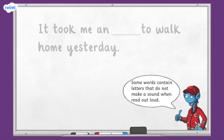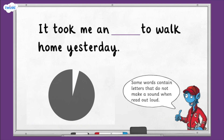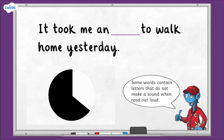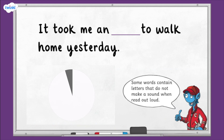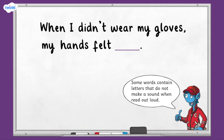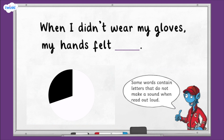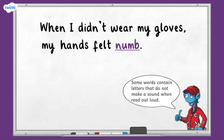The word is hour. 'It took me an hour to walk home yesterday.' The word is hour. Hour is spelt h-o-u-r. The word is numb. 'When I didn't wear my gloves, my hands felt numb.' The word is numb. Numb is spelt n-u-m-b.